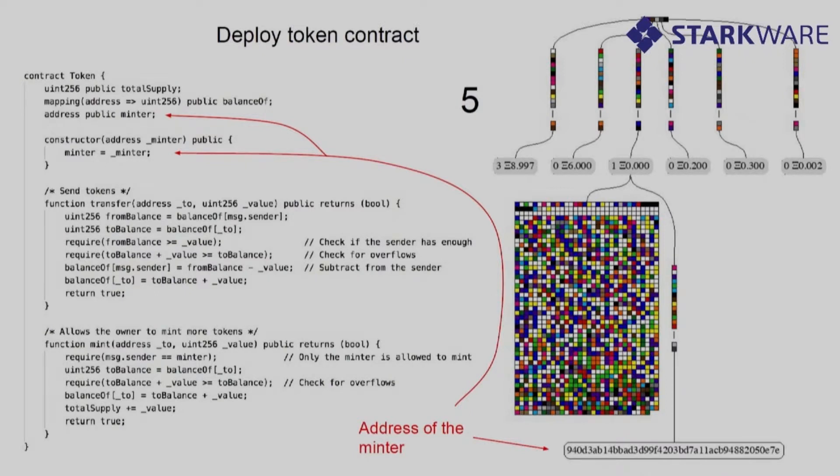All it has is mint and transfer. So basically the minter can mint a number of tokens to another address and anybody could transfer them. When we compile it with the latest Solidity compiler we see just under a kilobyte of bytecode which is basically that big square with lots of colors. You can appreciate how big it is. This is basically like 800 bytes or something. And then you can see that there's address of the minter appears somewhere there.